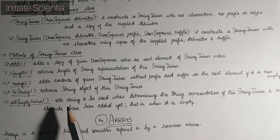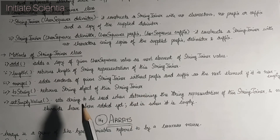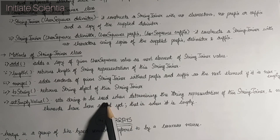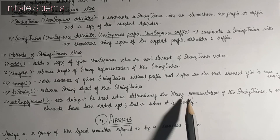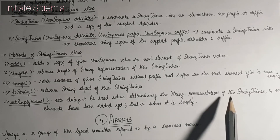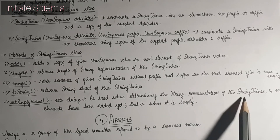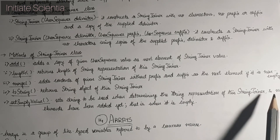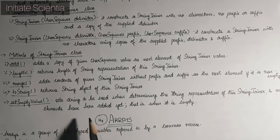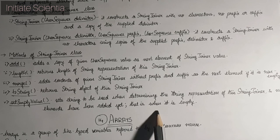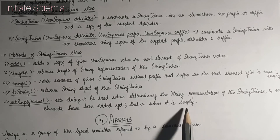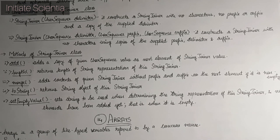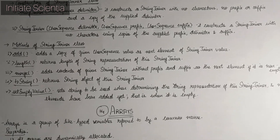setEmptyValue() sets the string to be used when determining the string representation of the StringJoiner and no elements have been added yet — that is, when it is empty. Next, let's discuss about arrays.